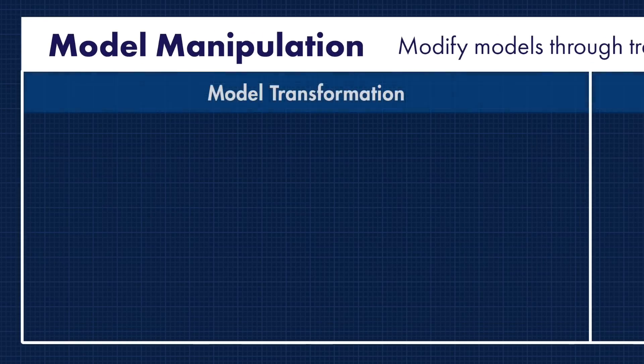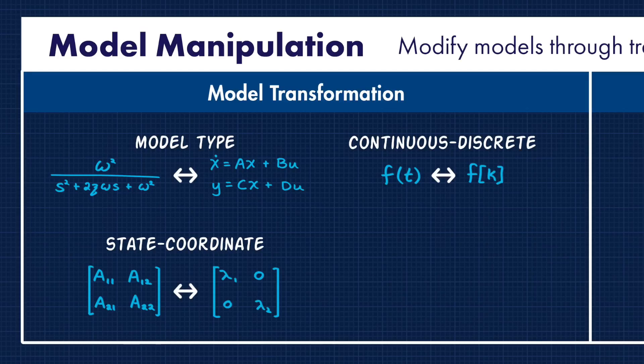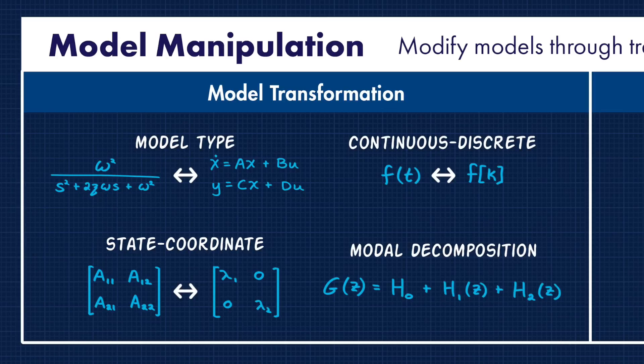For example, you might need to transform the model to a different type, going from like a transfer function to a state space model. Or you may need to change the domains that it's operating in, to go between continuous and discrete domains. You may also need to manipulate a state matrix, where you can do things like switch between having the eigenvalues along the diagonal, so that you have a sense of which modes exist in the system, versus a format where the system states are possibly more aligned with the physical attributes of your system. Or you may want to decompose a larger model into smaller models that make it up. All of these things fall under the umbrella term of model transformation.